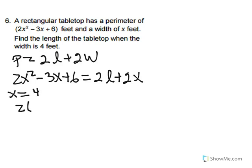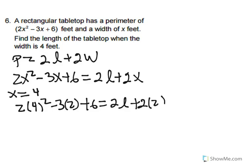so we have 2 times 4 squared minus 3 times 2 plus 6 equals 2 times L plus 2 times 2.